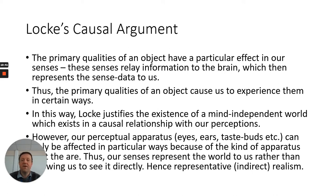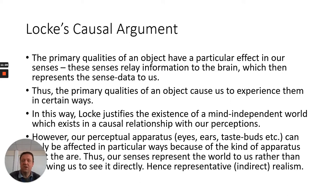Our perceptual apparatus can only be affected in particular ways because of the kind of apparatus it is — our senses represent the world to us rather than allowing us to see it directly. It is the kind of apparatus we have, such as eyes, ears, and taste buds, that determines how we experience the world. As I've mentioned in the video on direct realism, other animals perceive the world differently. For example, the kestrel, a small bird of prey, can actually see ultraviolet as a colour, whereas to human beings it is invisible. This raises the question of correctness of perception — how do we know that human beings see the world correctly? It's perhaps just that we perceive things differently; it's about how our perceptions represent the world to us.